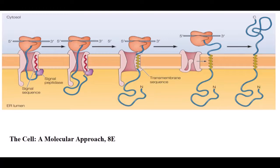First, we see insertion of a membrane protein with a cleavable signal sequence. The signal sequence is cleaved as the polypeptide chain crosses the membrane, so the amino terminal of the polypeptide chain is exposed in the ER lumen. The transmembrane sequence is recognized by the translocon to stop translocation, allowing the protein to exit the translocon laterally and become anchored in the ER membrane.